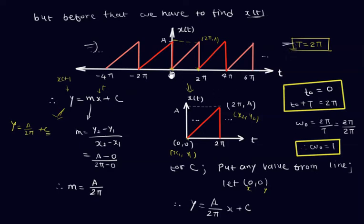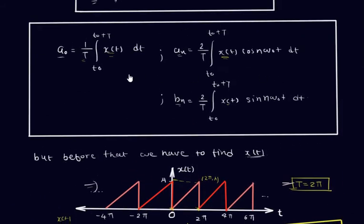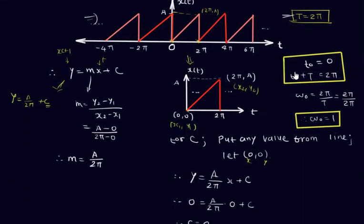Our function starts from the origin, so T0 = 0. It completes its first cycle at T0 + T. At that location we have the value 2π. Therefore, the integration limits will be from T0 to T0 + T, that is from 0 to 2π.